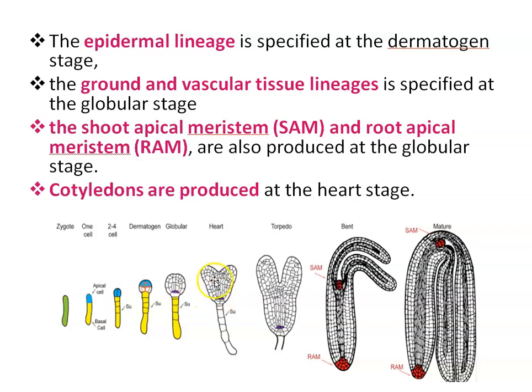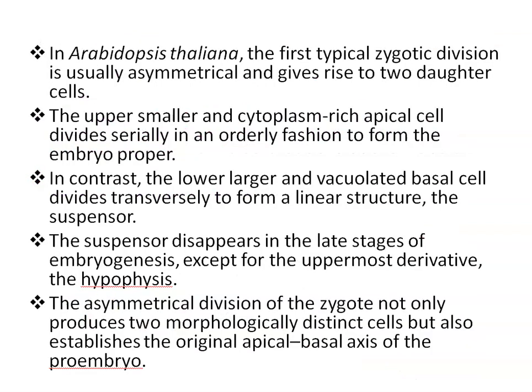Cotyledons are produced at the heart stage — you can notice here the development of cotyledons. After pattern formation, the embryo undergoes a period of morphogenesis where growth of the organs established by the heart stage leads to an embryo with a fully organized shoot apical meristem and root apical meristem, hypocotyl, and elongated cotyledons. This is the heart stage, torpedo stage, bent stage, and mature stage of the embryo.